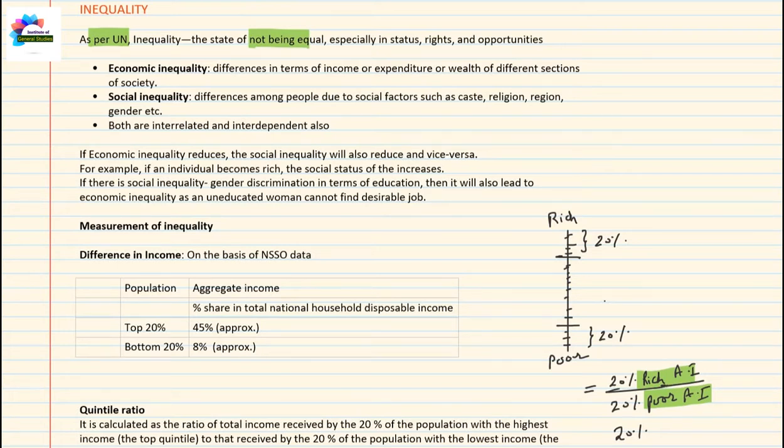Broadly speaking, inequalities are of two types: economic inequality and social inequality.